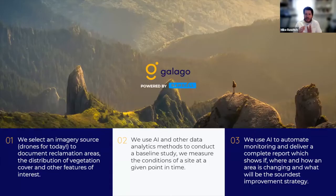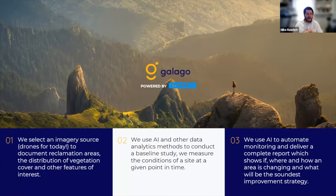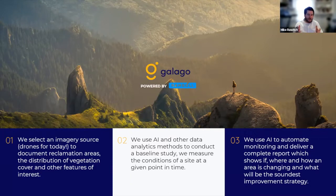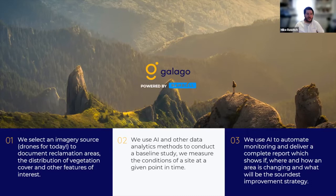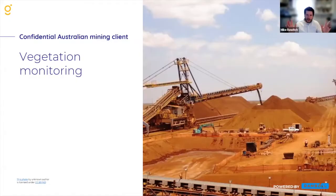We go through a three-step process. First, we select an imagery source—drone imagery, satellite imagery, aerial imagery, or even stratospheric balloons. Then we analyze that imagery to obtain a baseline survey of metrics like vegetative cover or the aerial distribution of invasive species, and monitor year after year to document progress. Because all this information is digital, we can automate some of the reporting, taking what used to take weeks or months down to just a few days.